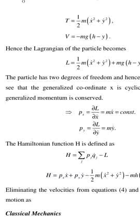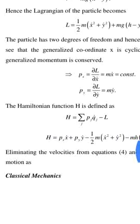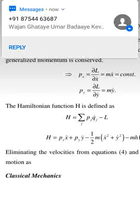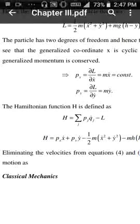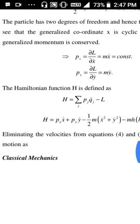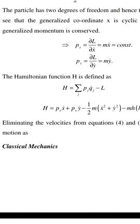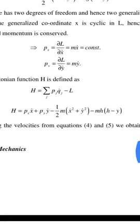Py = ∂L/∂ẏ = mẏ. The Hamiltonian function H is defined by: H = ΣPj·Q̇j - L = Px·ẋ + Py·ẏ - (1/2)m(ẋ² + ẏ²) - mg(h - y).